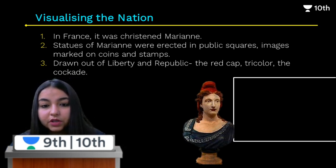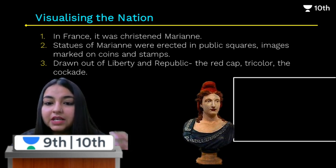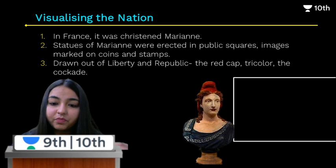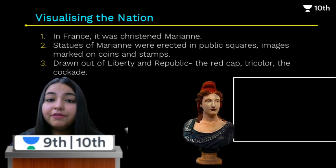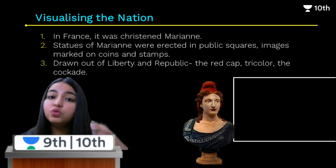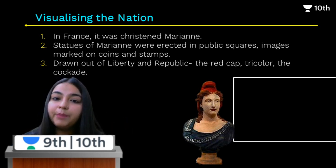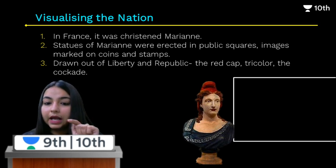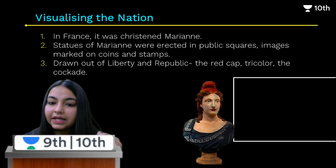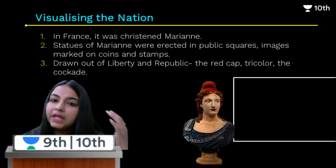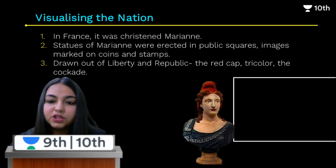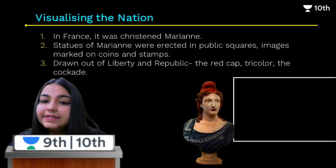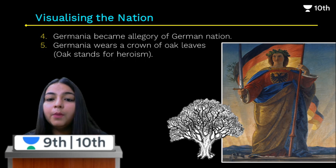Looking at the image of Marianne, the red cap she is wearing symbolizes liberty. She also holds a tricolor flag, representing that France is independent and wants to be liberal. There is also a cockade — a knot of ribbon tied around a hat — which Marianne used to wear. Similarly, in Germany, the allegory for the German nation was called Germania.